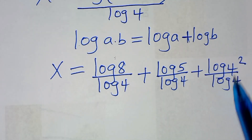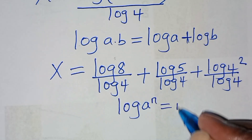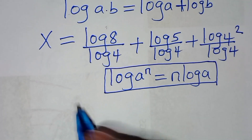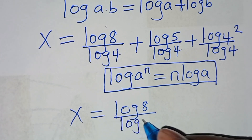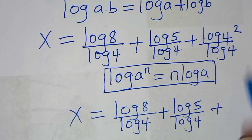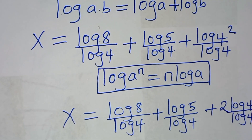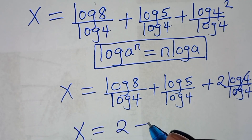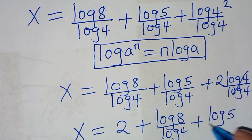We can express log 4 to the power 2 by applying the power property — that is, log a to the power n can be expressed as n log a. So log 4 to the power 2 becomes 2 log 4, divided by log 4. Log 4 and log 4 simplify, so now we have x is equal to 2, plus log 8 over log 4, plus log 5 over log 4.